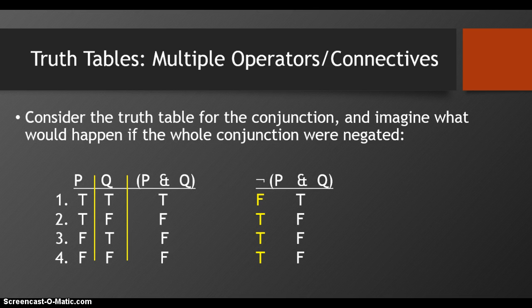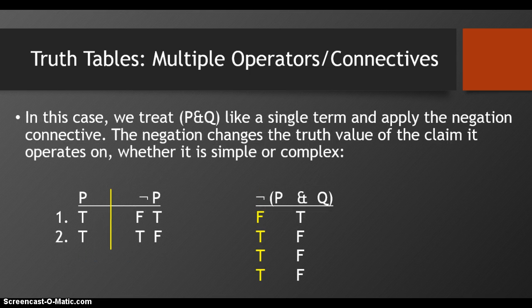This is a more complicated truth table than you saw in Part 1. In this case, we treat P and Q like a single term, like a single claim, and apply the negation to the connective — to the column that's under the connective. The negation changes the truth value of the claim it operates on, and that's so regardless of whether it's simple, as in P, or complex, as in P and Q.